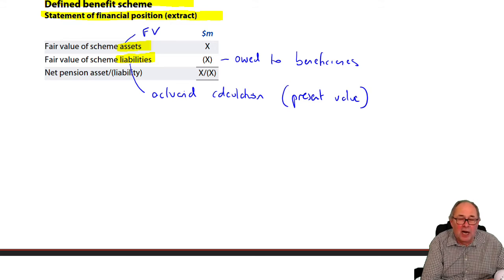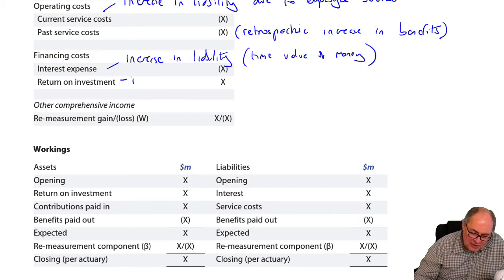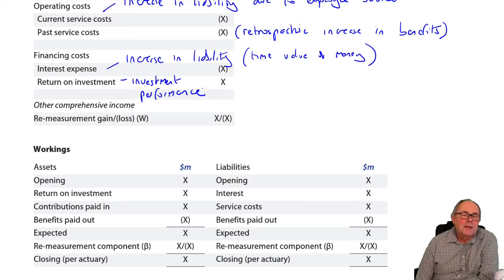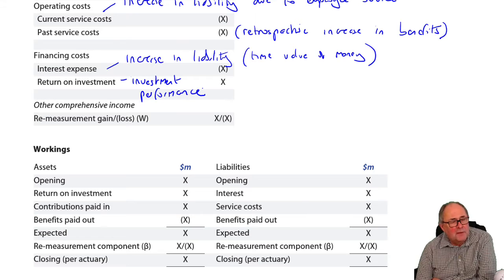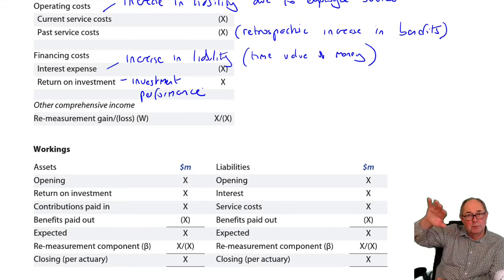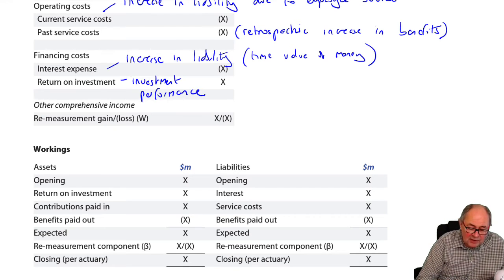In the meantime, the assets will also grow because they're invested — this is all about investment performance. That too causes a problem because in some years the equity and bond markets do well, in some years they don't. And this is a long-term time frame if someone is working for you for 40 years.